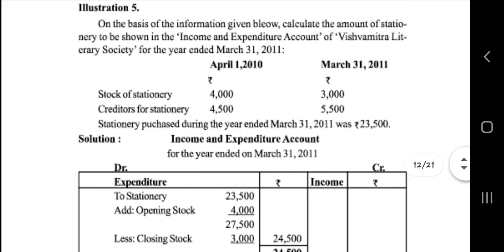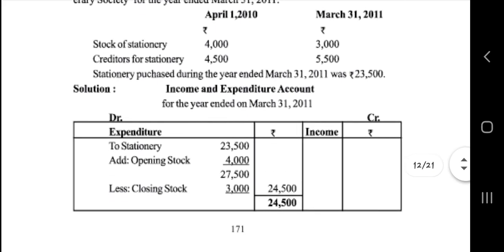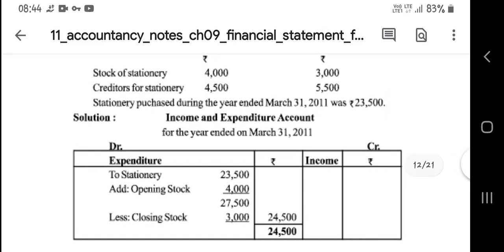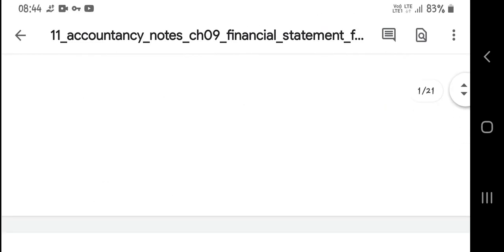Next, the lesson has given that opening stock is 4,000. So total purchases are 23,500 and opening stock is 4,000, giving 27,500, and closing stock is 3,500, therefore 24,500 is the total amount.